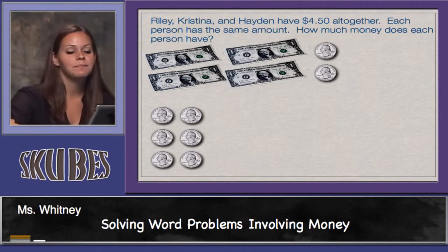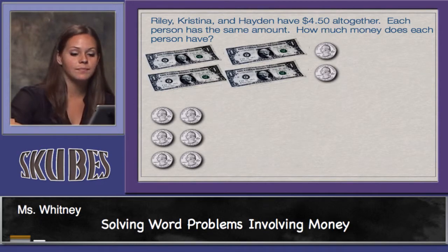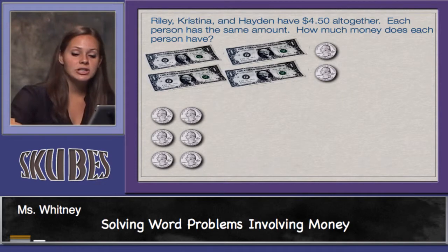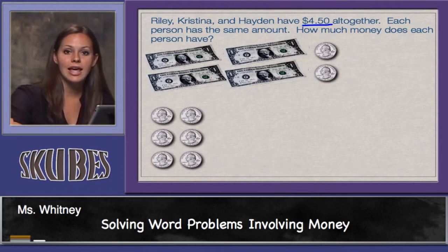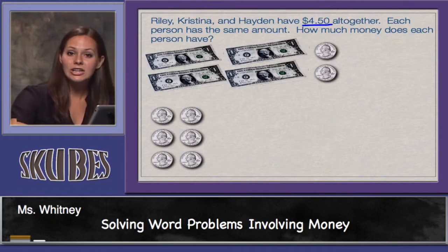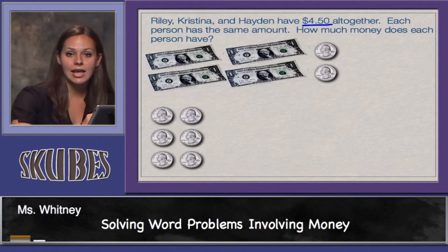Let's practice another one. Riley, Christina, and Hayden have four dollars and fifty cents altogether. Each person has the same amount. How much money does each person have? We know all together the three girls have four dollars and fifty cents, and since they each have the same amount, we need to divide four dollars and fifty cents by three.